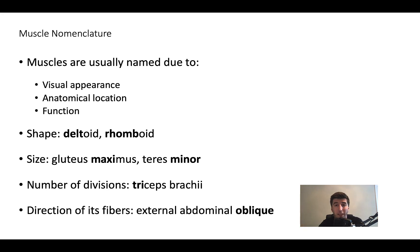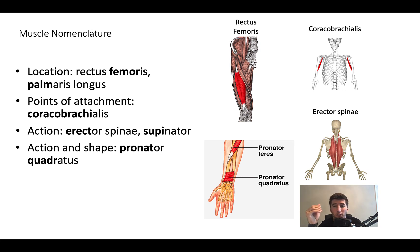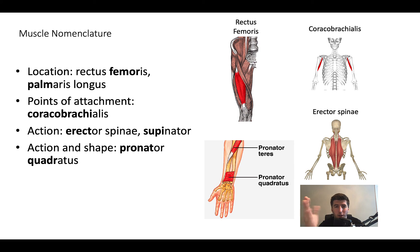External abdominal oblique — oblique means it's not going to be running in a perfectly straight or normal line, it's going to be coming at an angle. Another great one to remember is location: rectus femoris. Rectus actually means straight — femoris means it's running straight along the femur. Perfect. Points of attachment — coracobrachialis tells you that it's originating on the coracoid process. Action — erector spinae means it's going to keep the spine erect.